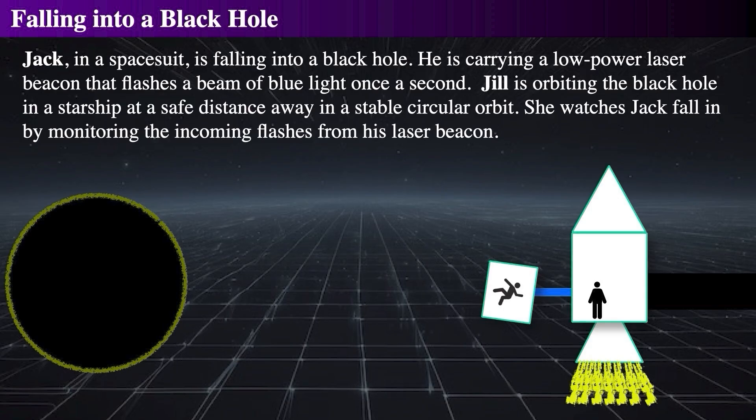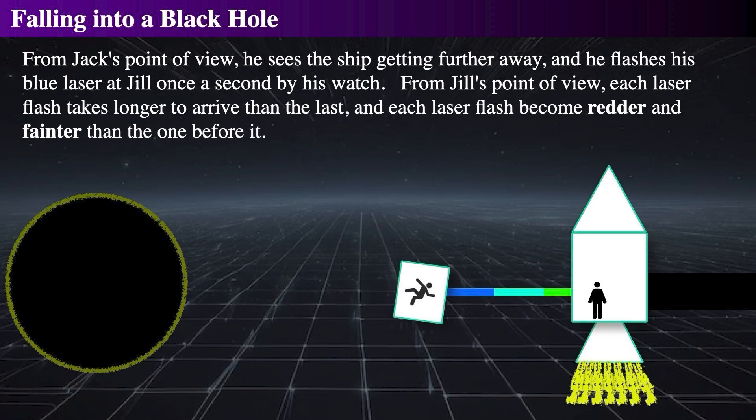As Jack falls towards the black hole, he begins shooting the laser in pulses one pulse per second, and Jill watches him from the rocket, observing his descent. From Jack's perspective, the ship recedes into the distance as he flashes the blue laser once per second according to his watch.